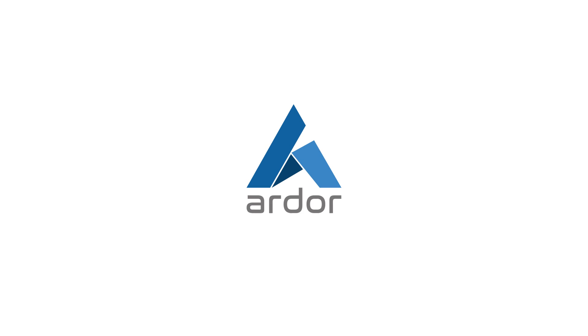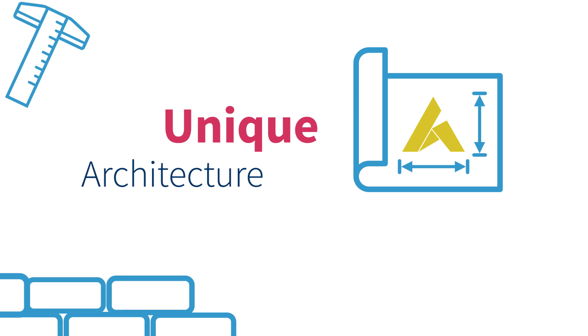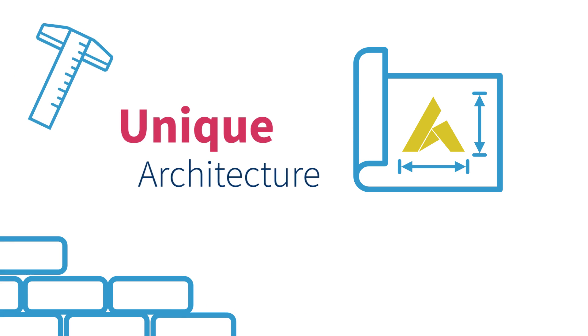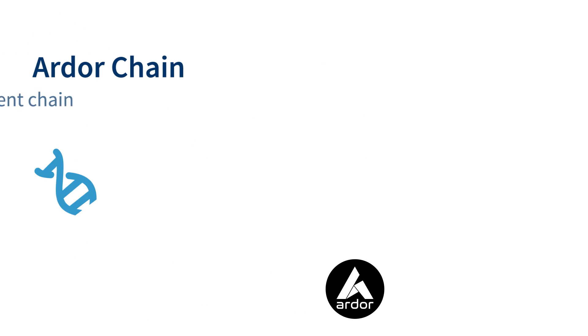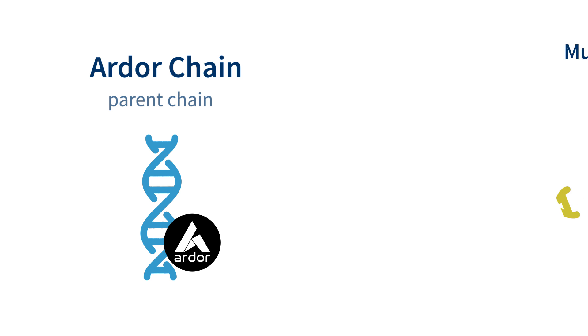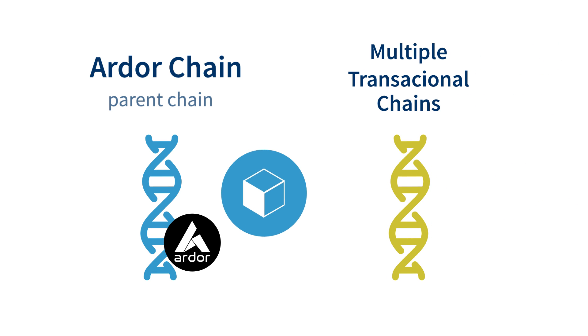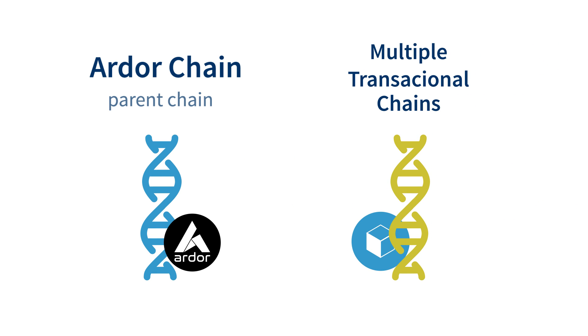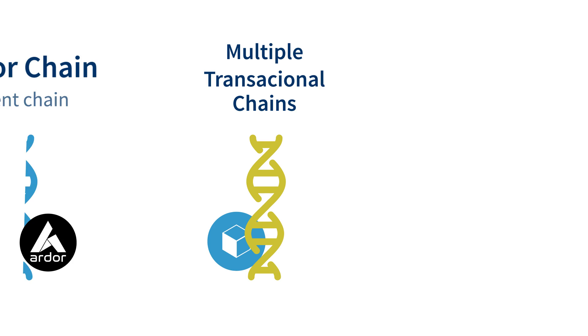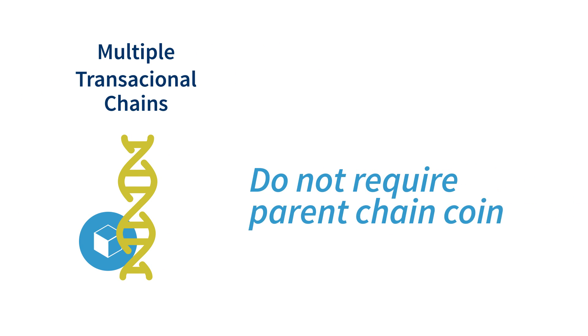Ardor is a multi-blockchain platform with a unique architecture that separates the network processing and security chain, known as the Ardor parent chain, from the transactional chains. These transactional chains, known as child chains, have their own native coin for all transactions and thus don't require their users to have parent chain coins.